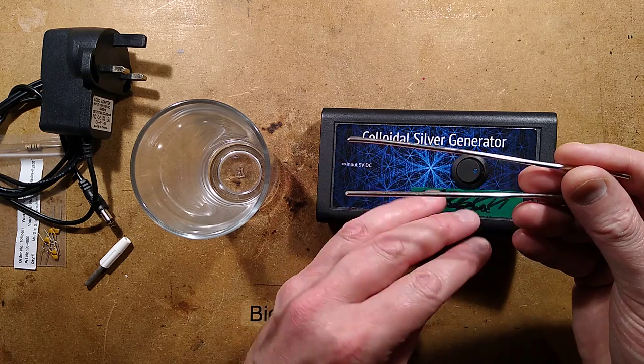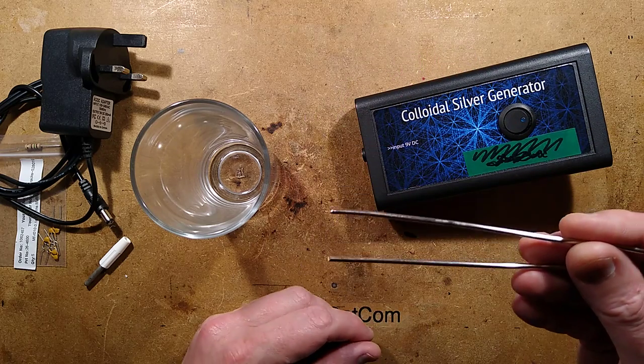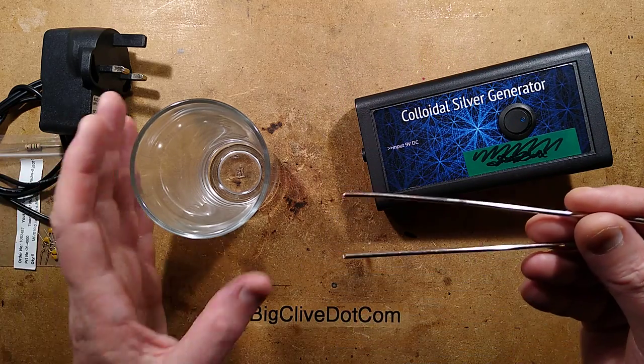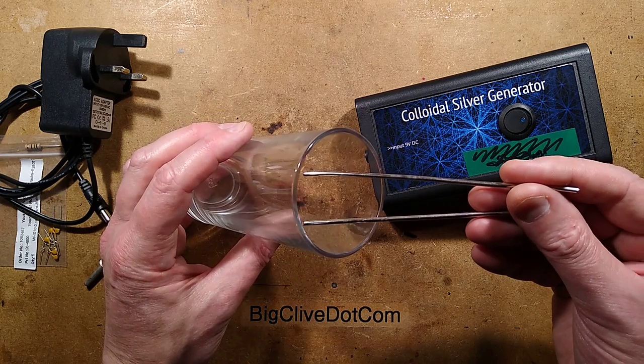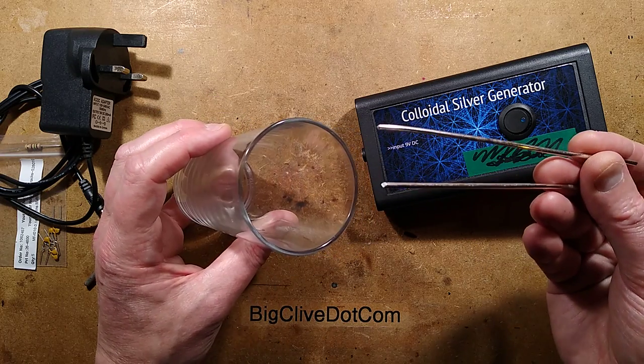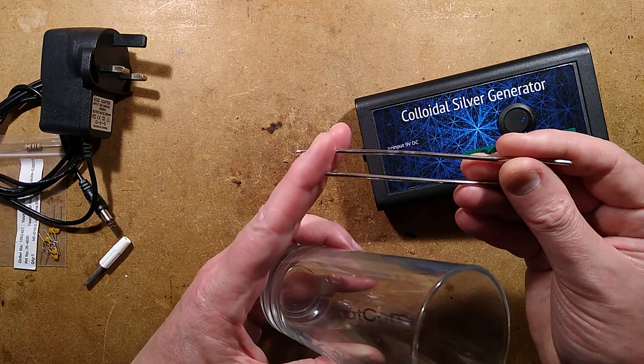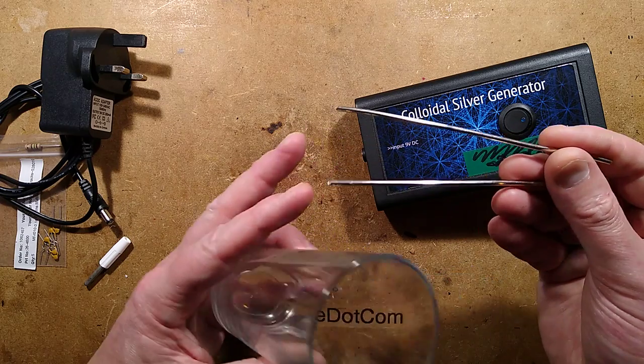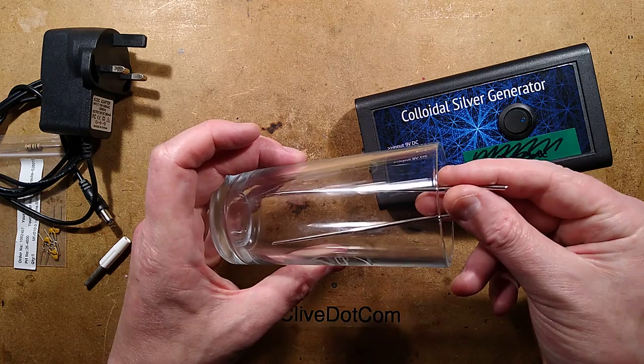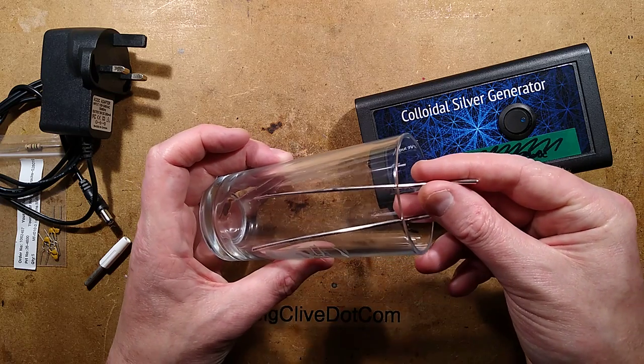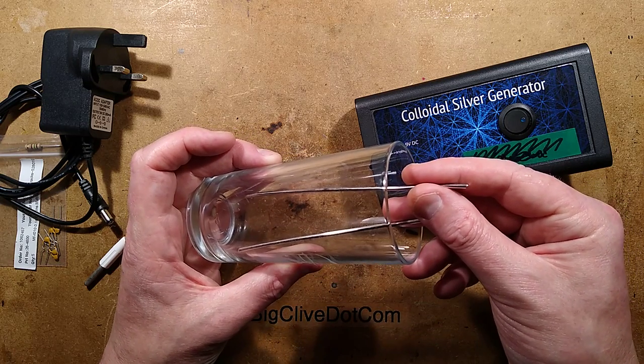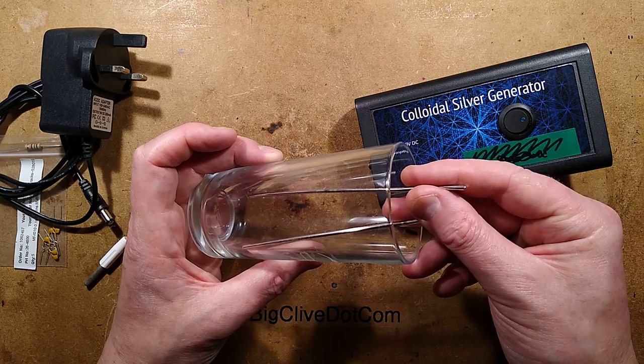These are silver electrodes, pure 0.999 silver electrodes, 99.9% high purity. They cost a bit more than ordinary sterling silver, which is an alloy. But these are just pure silver. You place them into the water, not touching, spaced apart, and you apply a DC voltage across them at low current.